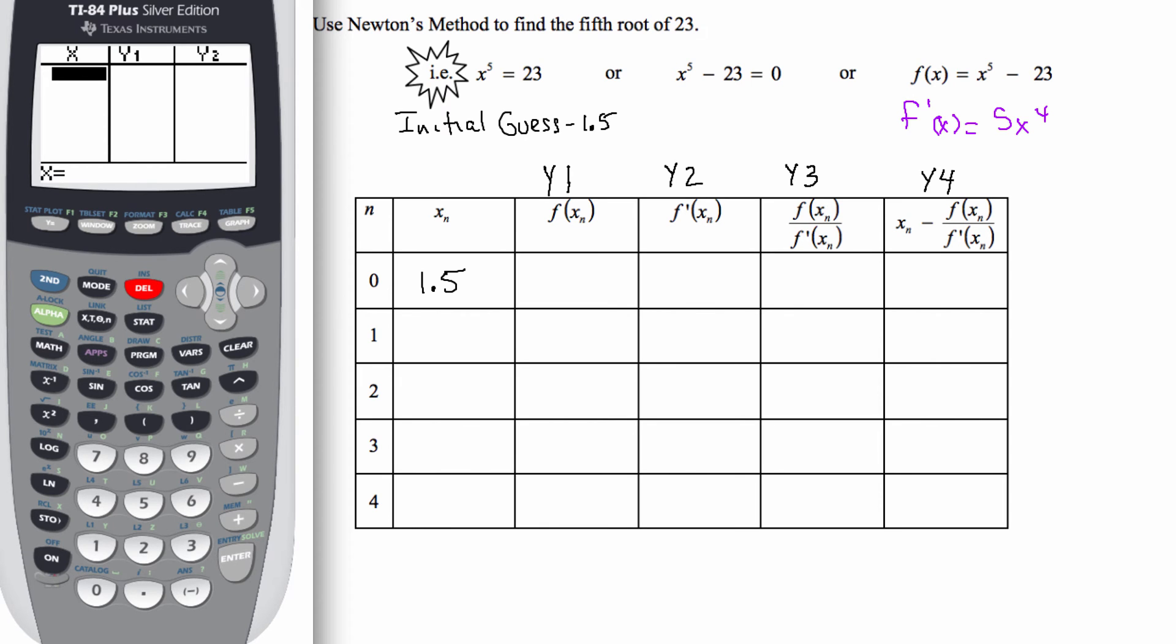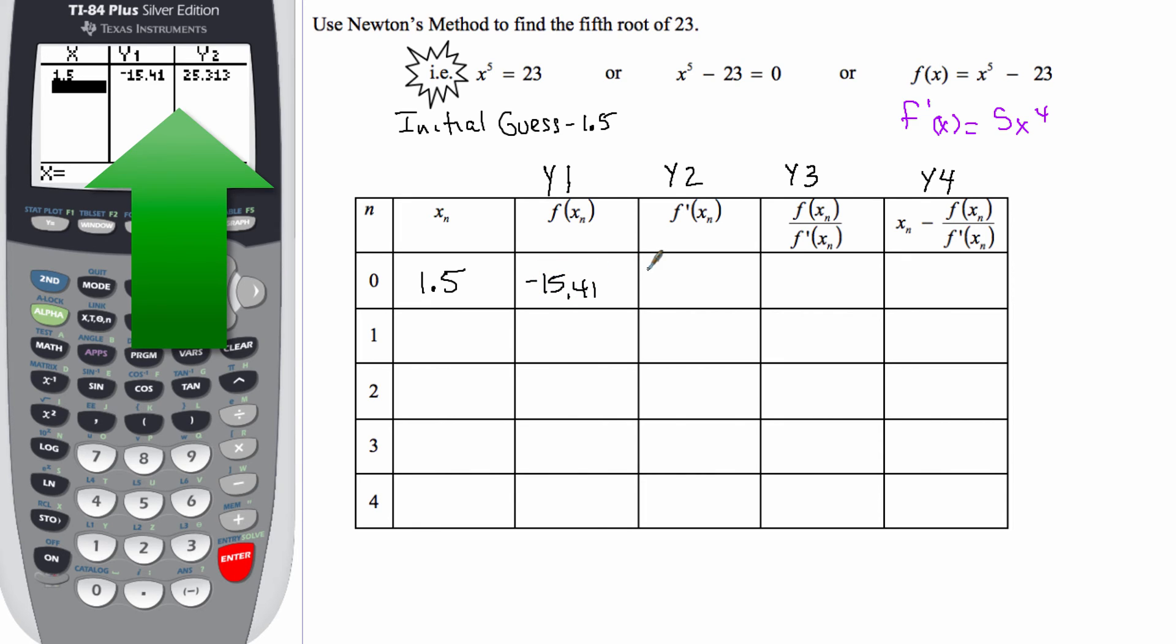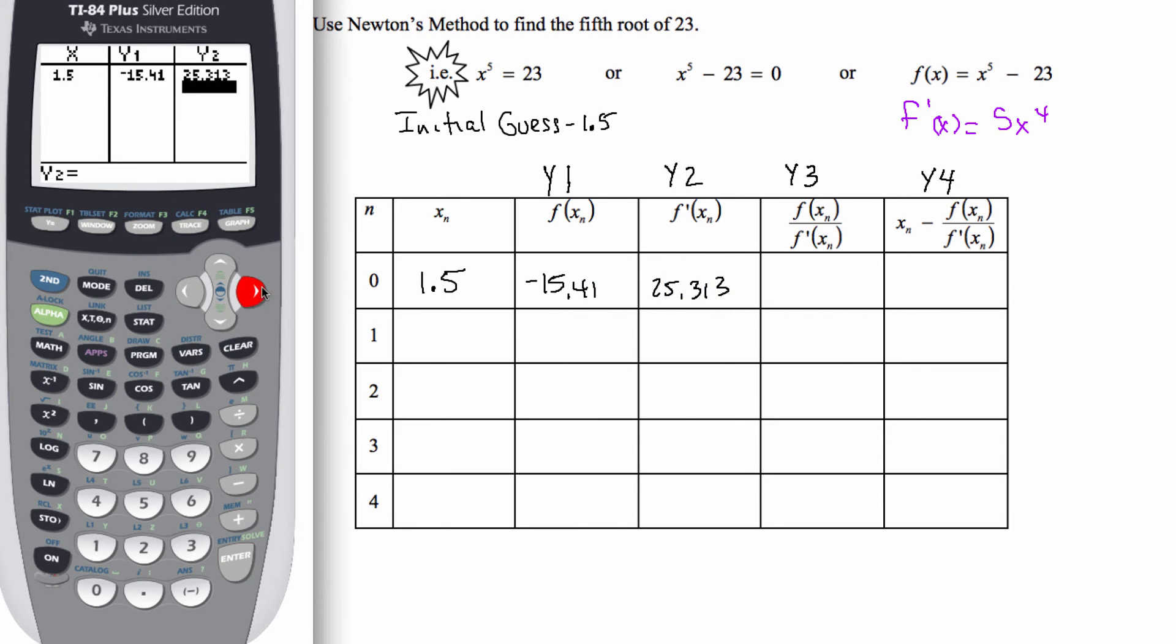Now once your calculator is set up correctly, what you're going to do next is you're going to go ahead and you're going to input that initial guess of 1.5 into your table of values. So once you get that input, then the rest is going to be simply filling in your chart. So in y1, we're going to write that negative 15.41. In y2, we'll have 25.313.